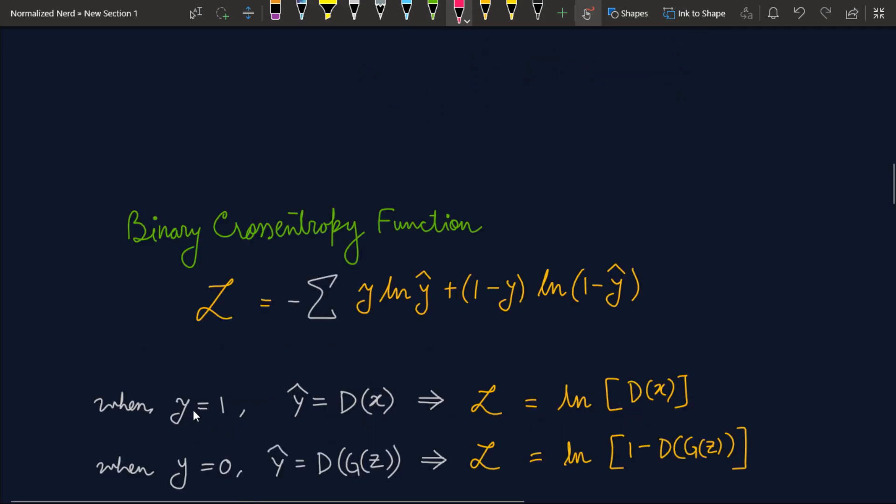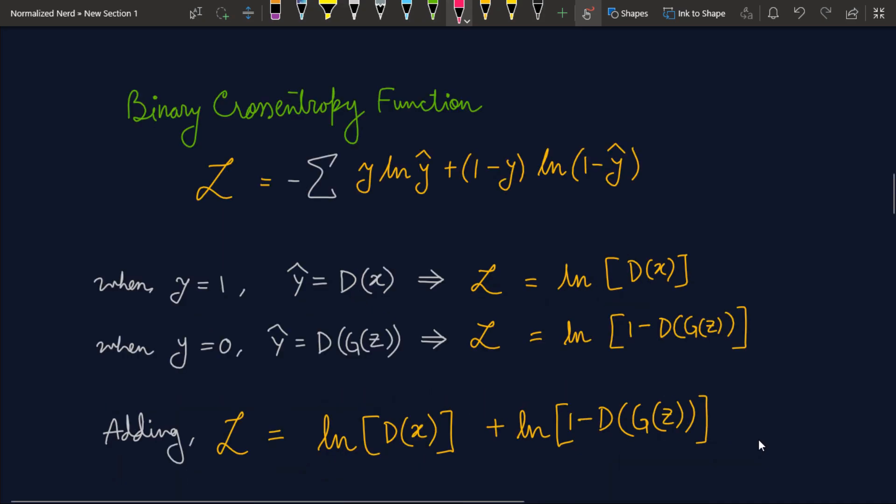When y is equal to one, that is when we are passing the original data, the ypred is equal to D(x). So if you just replace these things in the formula you will get loss equal to ln[D(x)]. Now when we are giving the fake data as our input the ypred will be D(G(z)). Because obviously first we have passed the noise to our generator and it has produced something and then we are giving the produced fake data to the model D. And if you replace these things in the function you will get ln[1-D(G(z))]. Now let's combine them. So I have just added them together and we get this. Does it look similar to the value function? Yes. But here we are missing the capital E's at the front.